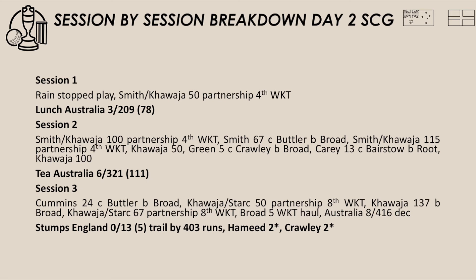England did well to get Australia four down for 232 when they broke the partnership between Smith and Khawaja, but you thought if they could have got another couple of wickets and had Australia six down for 232 it would have been a better story. Unfortunately, as we've seen in this series, England haven't been able to take back-to-back wickets, sustain pressure, or bowl out the Australian tail. Yet again Australia's tail added big partnerships — 43, 46, 67 and 18 unbeaten — and Australia got up to 8 for 416 declared.